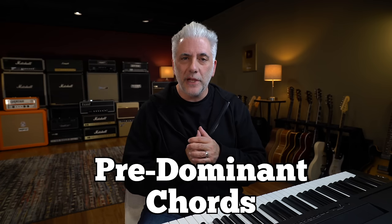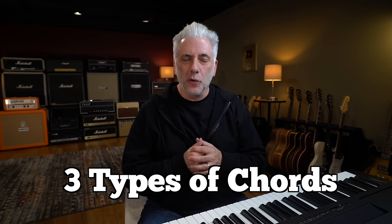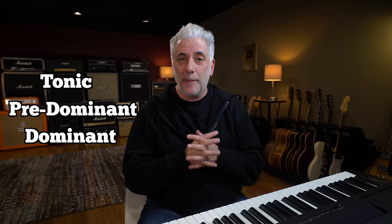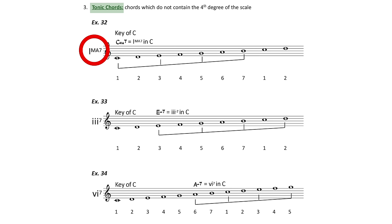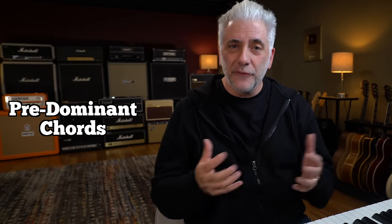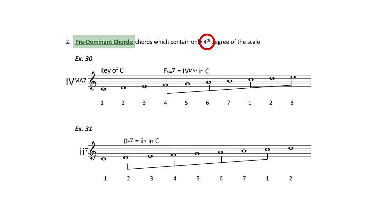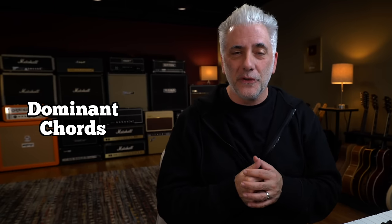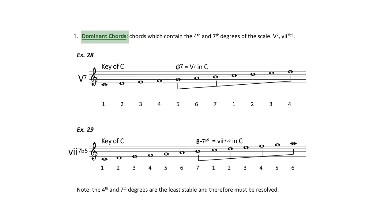The reason the two chord is a substitute for four is because they are both predominant chords. In major keys, we have three chord classifications: tonic chords, predominant chords, and dominant chords. A tonic chord — the one, three, or six chord — none of them contain the fourth scale degree. In the key of C, that would be the note F. So C major, E minor, and A minor don't have F in them. Predominant chords have the fourth scale degree — that's D minor (D, F, A) and F major. Dominant chords contain the two unstable notes: the fourth scale degree and the seventh. So G7 and B half-diminished both have F and B in them.